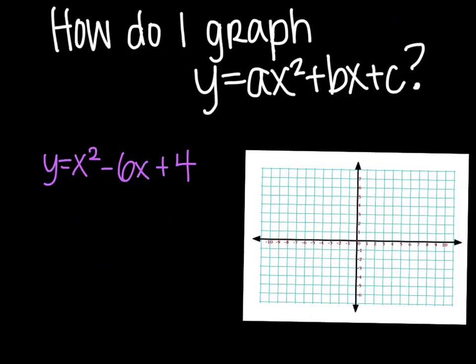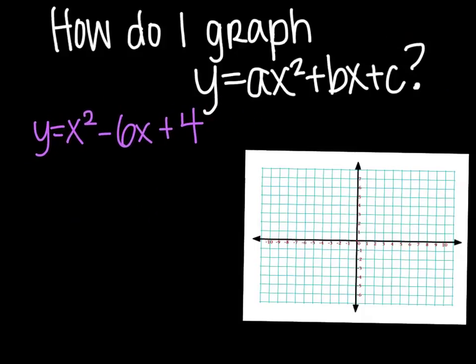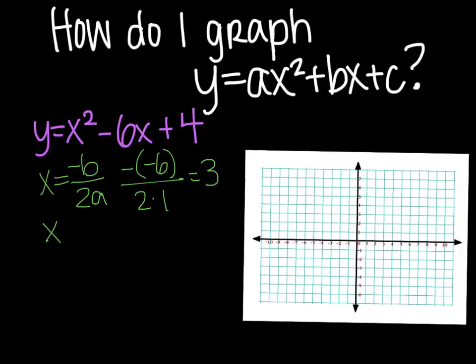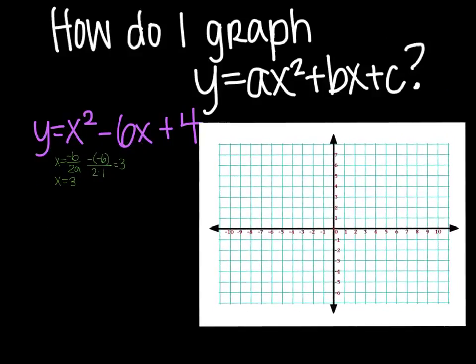How do I graph y equals ax squared plus bx plus c? You have your equation here. The first thing you need to do is find that line of symmetry. So in order to do that, I'm going to take x equals the opposite of b over 2a. So the opposite of b is negative 6, and then 2 times 1, which will give me an answer of 3. So my line of symmetry is x equals 3. And I'm going to plot that right now, so that you can see that. That'll be this line right here.